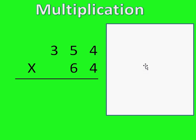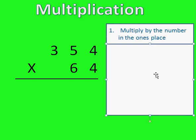So the first step we have is multiplying the number in the ones place. The number in the ones place right here is the four.